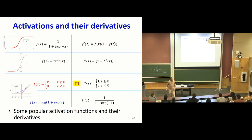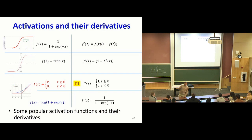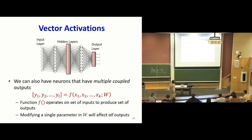Then there's the ReLU, which is very popular: the activation is zero if the input is negative, and exactly the same as the input if it's positive. There's something peculiar about the ReLU — it's not differentiable at zero. We said we wanted this to be differentiable, so we're going to assume the derivative at zero is one. Then there's the softplus, which is a softer version of the ReLU that is differentiable everywhere.